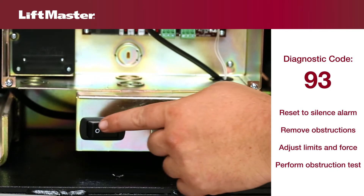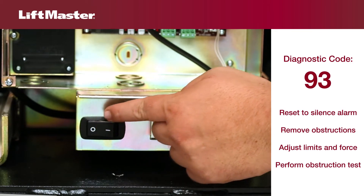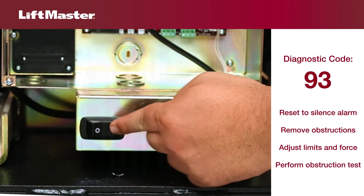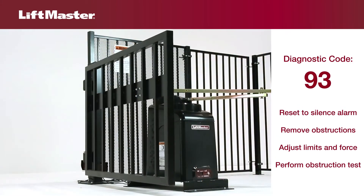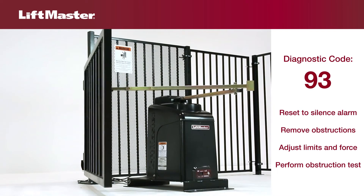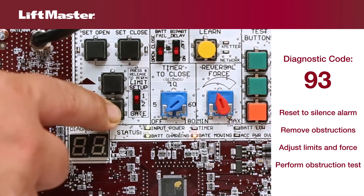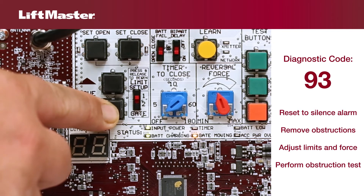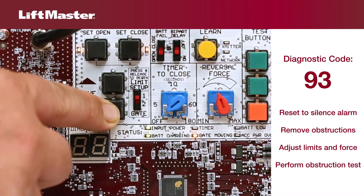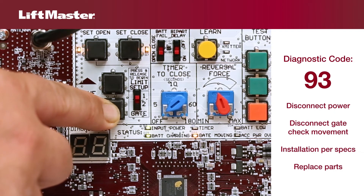To resolve the issue, press the reset button to shut the alarm off if it's sounding. Check for and remove any obstructions and debris in the gate's path. Adjust the limits and force. Always perform the obstruction test after making any adjustments. Refer to the manual to learn how to perform the obstruction test. If the problem persists, try the following.